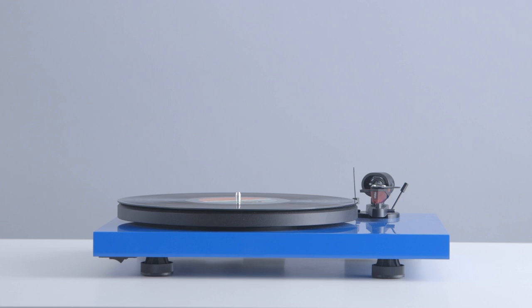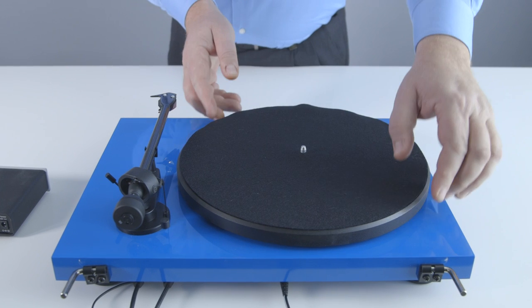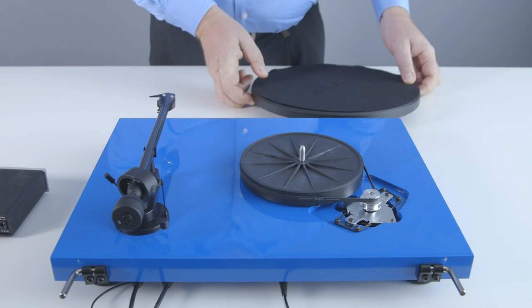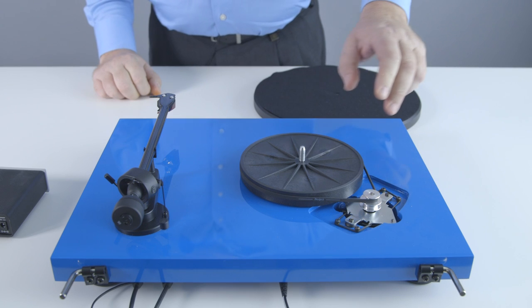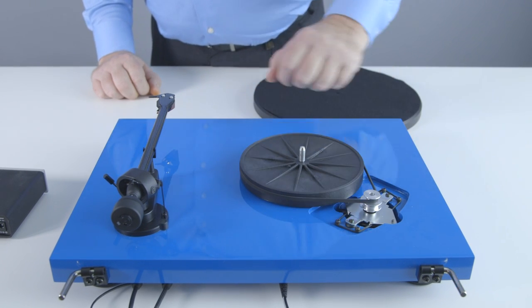Let's have a look at the different parts of a turntable to explain this further. When we move the platter of this Debut Carbon, we see the motor that makes this smaller sub platter spin. The two parts are connected together with the belt.